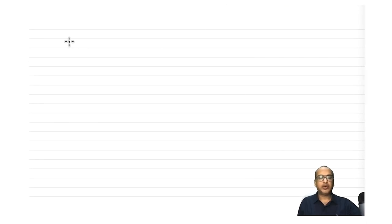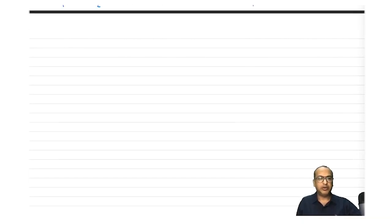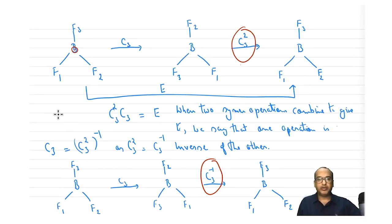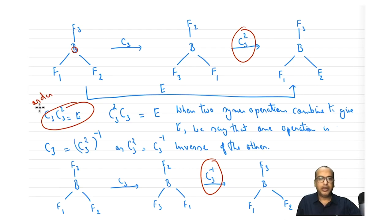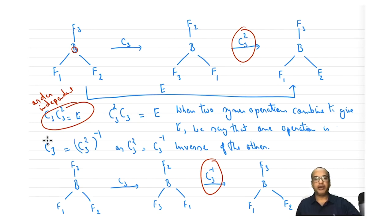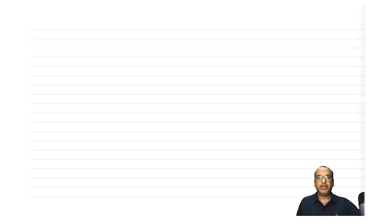In this particular case the order does not matter — C3 and C3² can be done in either order and still give E. When two operations combine to give E, the order is independent. But if they don't combine to give E, order will matter and the operations may or may not commute.